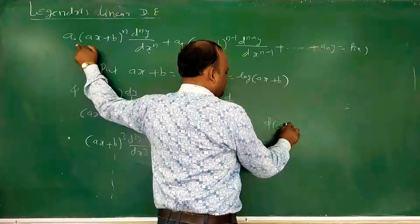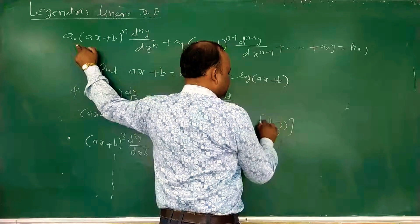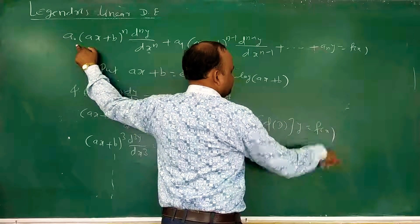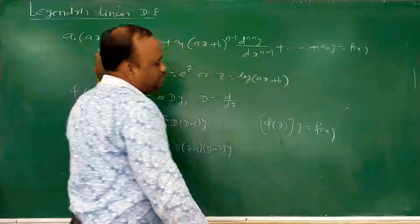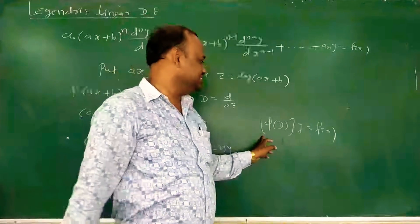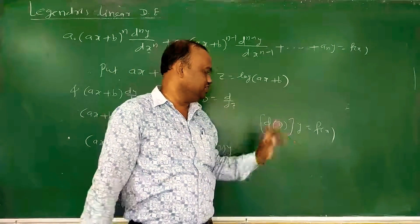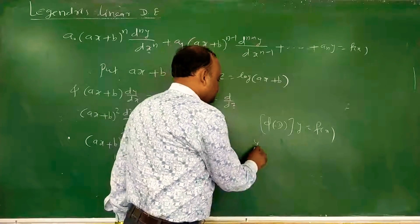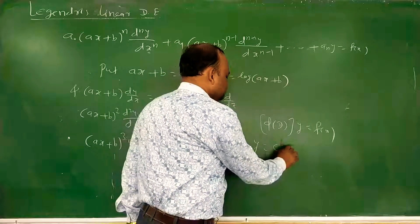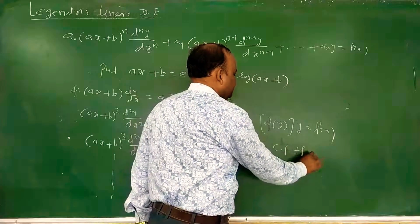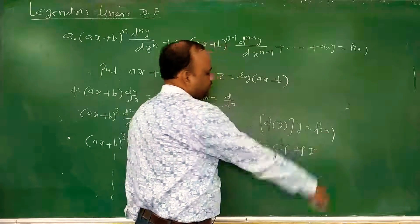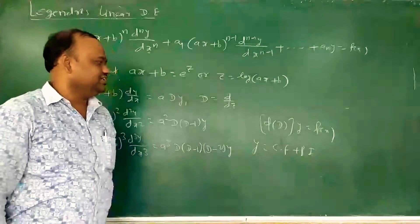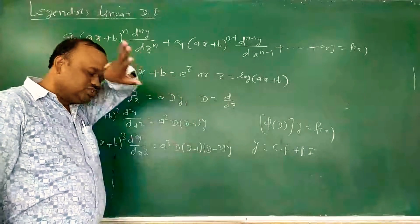After applying this substitution and simplifying, we get the differential equation in the form φ(D)y = f(x), which is a linear differential equation with constant coefficients, and its solution is y = CF + PI.